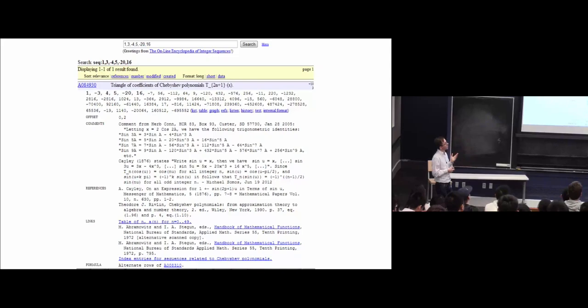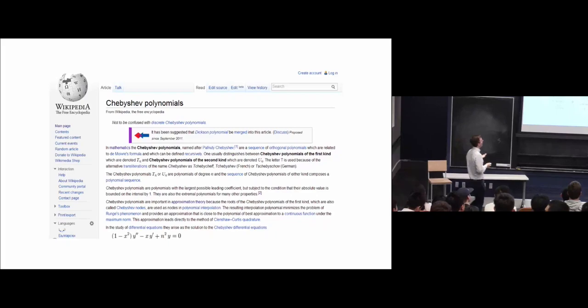If you type them in, then you're like, bingo. And you're like, oh, it's the triangle of coefficients of the Chebyshev polynomials, T sub 2 n plus 1 x. And then you're like, what are the Chebyshev polynomials? Well, of course, you go to Wikipedia and you start reading.